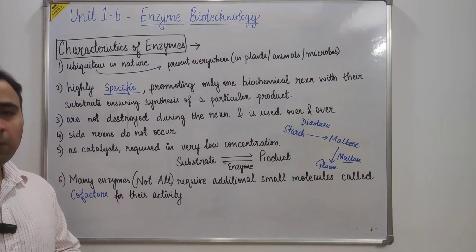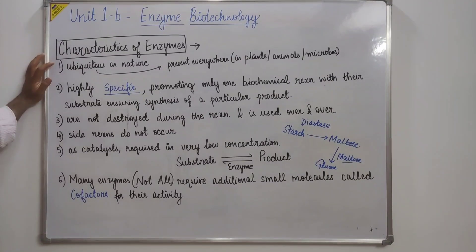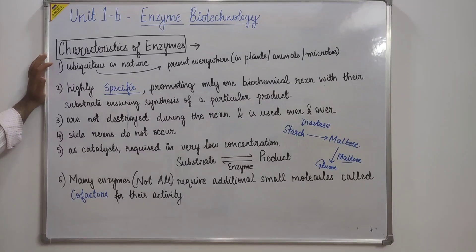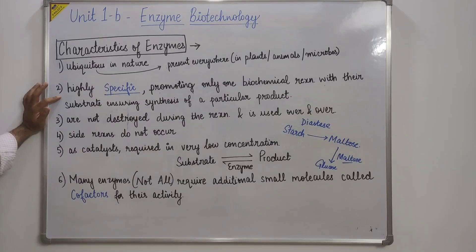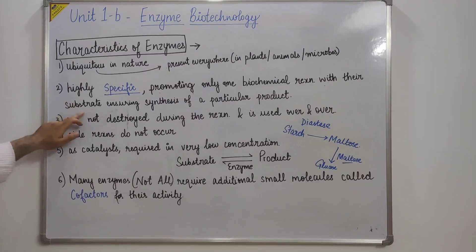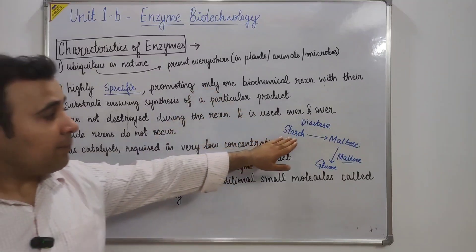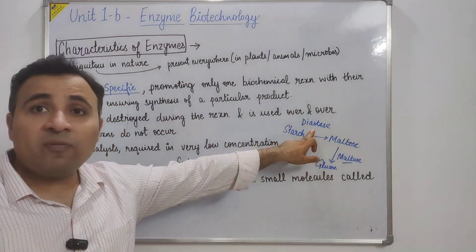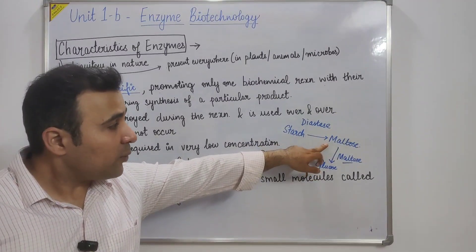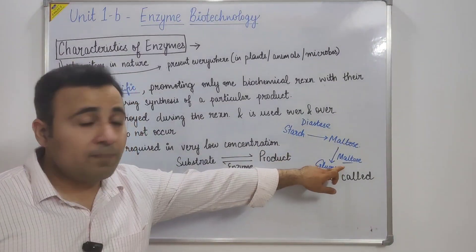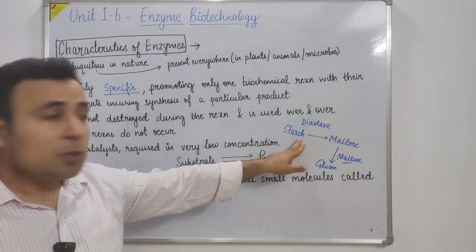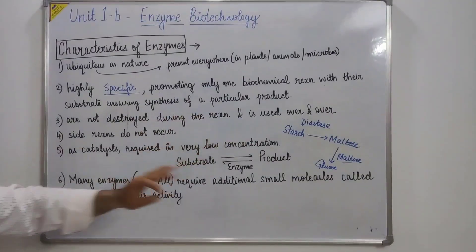Let's discuss the characteristics of enzymes. First, they are ubiquitous in nature, meaning they are present everywhere — in plants, animals, and microbes. Second, they are highly specific, meaning a particular enzyme will only promote one biochemical reaction with a particular substrate to ensure the synthesis of a particular product. For example, starch is converted to maltose with the help of diastase enzyme, and then maltose is converted to glucose with the help of maltase enzyme. You cannot use maltase to convert starch to maltose.